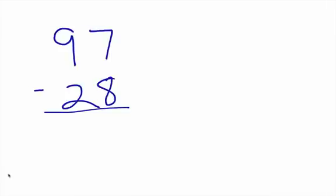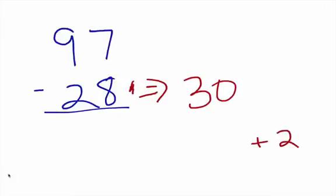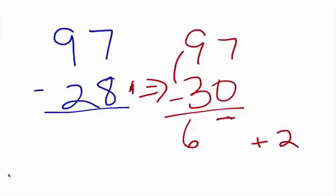Here's how you do it when you have to borrow. We want to simplify — we want to bring the 28 up to the nearest multiple of 10. So we bring it up to 30. And how far do we have to go up to get to 30? We have to go up 2. So we put a little plus 2 right there. Since we have 30, that makes the subtraction problem a lot easier. We have 97 minus 30. All we're dealing with is 9 minus 3, and that is 6. Bring down our 7. And 67 plus 2 is 69. Really simple.